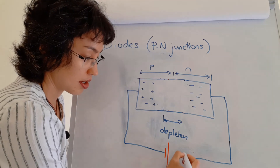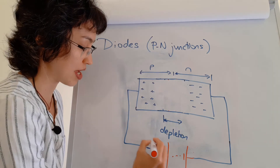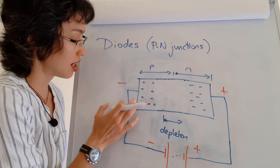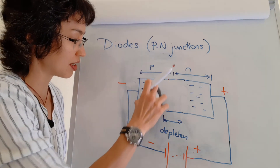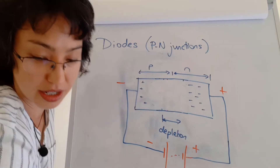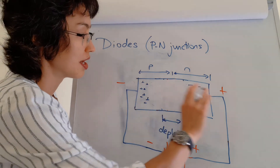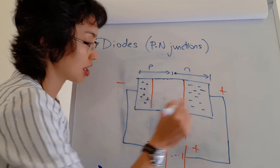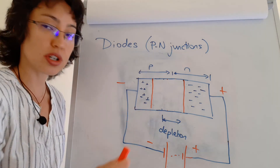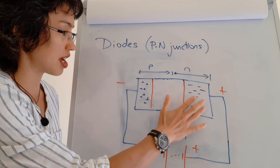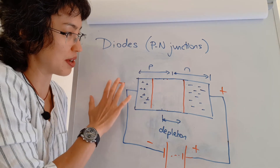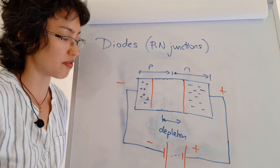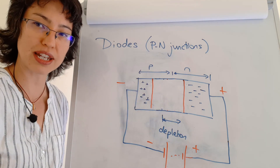If I now attach the supply in reverse — making the p-side negative and the n-side positive — the reverse happens. The holes become attracted to the negative terminal and group together on their side of the junction, while the electrons are attracted to the positive side and move away from the junction. The depletion region physically becomes a lot bigger, and no current can flow because the electrons don't want to cross to the negative side. So in reverse bias, the depletion region grows and no charges can flow. This makes a lot more sense when looked at in terms of energy band diagrams, which I'll draw next.